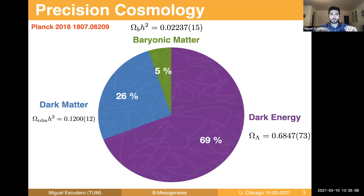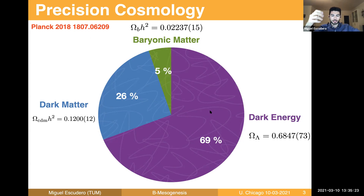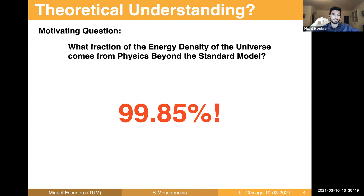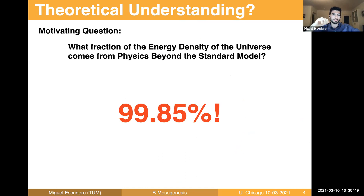Before I tell you all the features about B-mesogenesis, let me first review what is our current understanding of the universe. So I bet you have seen this pie chart a thousand times by now, but I'm going to show it again. We are living in a universe with 5% of matter in terms of energy content, 26% in terms of dark matter, and the remaining 69% in terms of dark energy, and we have actually measured rather precisely each of these components. Observationally, how much of it do we understand? What fraction of the energy density of the universe comes from physics beyond the standard model?